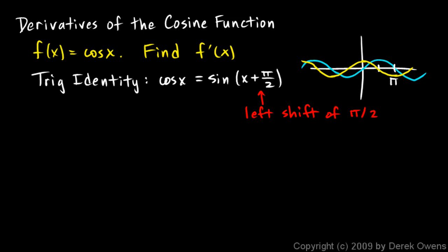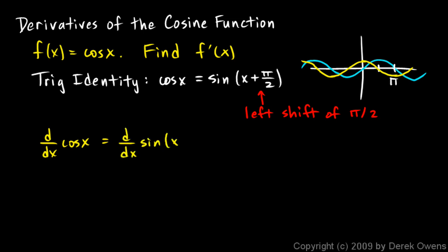So the cosine function is sine of x plus pi over 2. That means the derivative of the cosine function will be the derivative of sine of x plus pi over 2. So let's write that: the derivative of cosine of x is equal to the derivative of sine of x plus pi over 2.